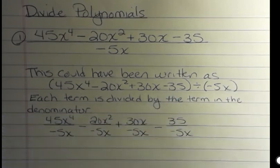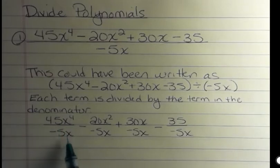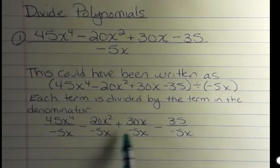And so when I set that up, it looks like this. 45x to the 4th over negative 5x, negative 20x squared over negative 5x, positive 30x over negative 5x, negative 35 over negative 5x.